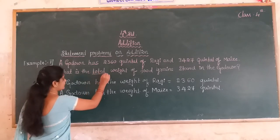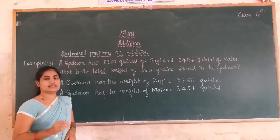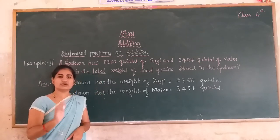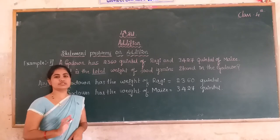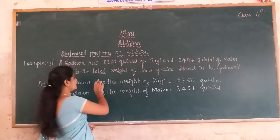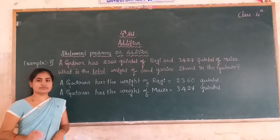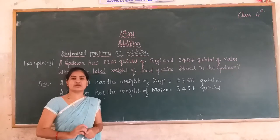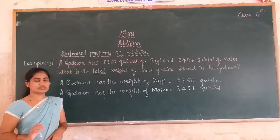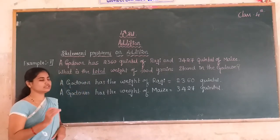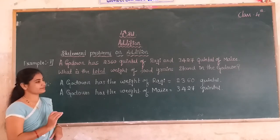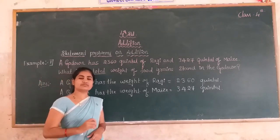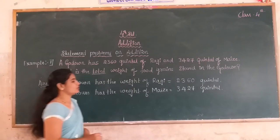Dear students, 'total' means to add both. In the statement problem, when the word 'total' appears in the question, you must do the function of addition. The total weight of the food grains means you add both the quantity of Ragi and also Maize to get the total weight of the food grains stored within the godown.